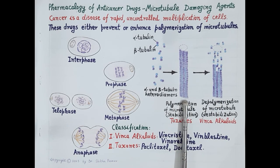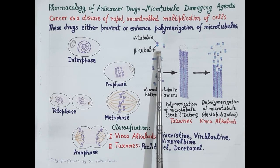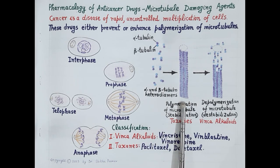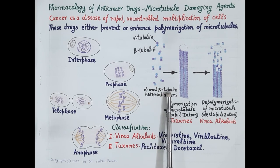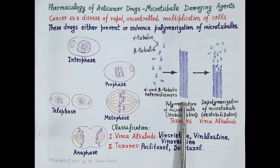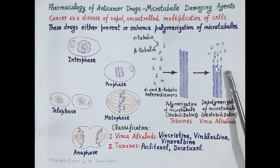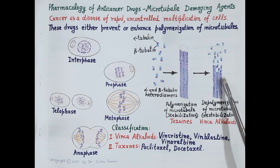Microtubules are composed of proteins alpha-tubulin and beta-tubulin that form dimers, so microtubules are composed of alpha-beta tubulin dimers. During polymerization, these dimers come together and align themselves, increasing the length of microtubules. During depolymerization, the dimers dissociate and move out of alignment, shortening the length of microtubules.